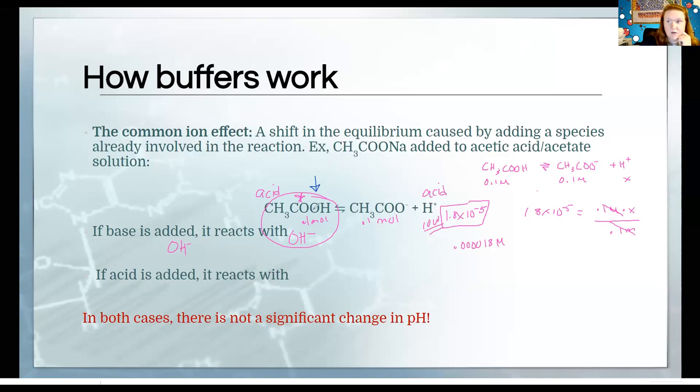If you think about these molarities, you're much more likely to run into an acetic acid than you are into an H plus. We're going to assume that the most concentrated thing is what is going to react. The acetic acid and the hydroxide are going to react together. That means we're decreasing the amount of acetic acid that's present for the equilibrium to use. That's okay because this is an equilibrium, so if we decrease a reactant, it's going to cause the equilibrium to shift to the left.